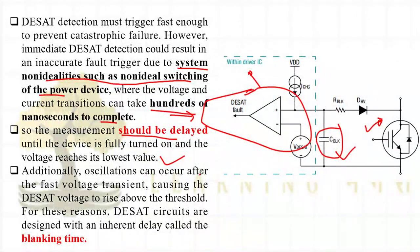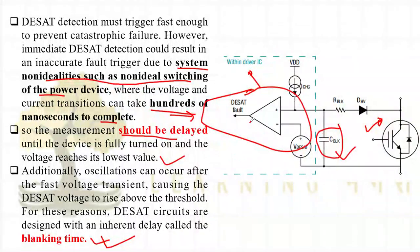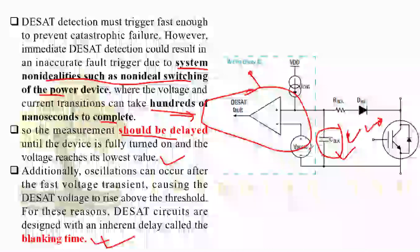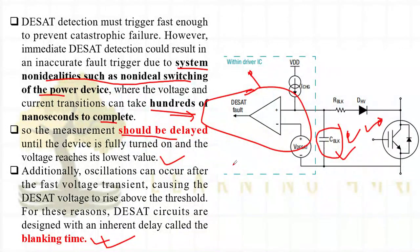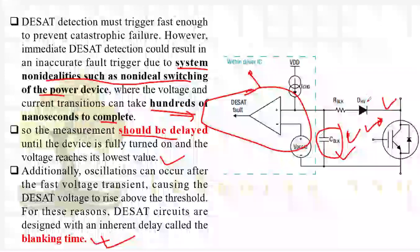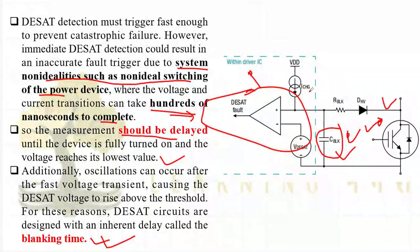The blanking capacitor provides a delay — measurement is delayed until the device is fully turned on and voltage reaches its lowest value. This delay must be sufficient to avoid counting transients. After fast voltage transients, oscillations can also cause V_dsat to momentarily exceed the threshold. For this reason, DSAT circuits are designed with an inherent delay called the blanking time.